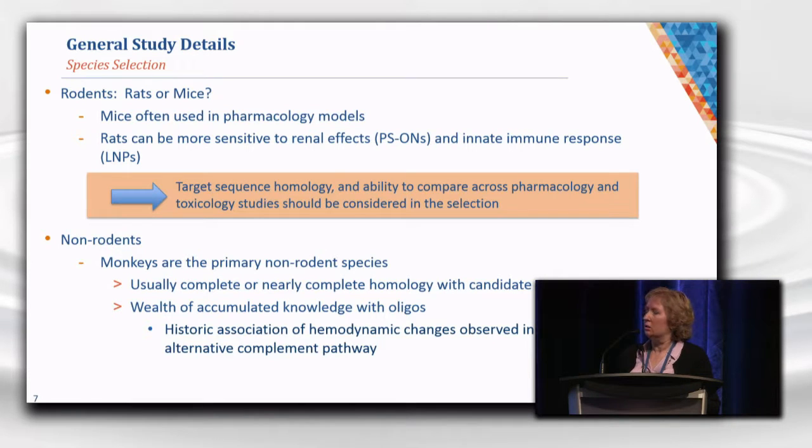For non-rodents, the monkey is the animal of choice. Typically, if there is an issue with homology, it's going to be with a rodent and not the monkey, so monkeys are often a good option for looking at exaggerated pharmacology. There is a wealth of accumulated data in monkeys because they've been used for roughly the last 20 years in oligonucleotide development programs — in part due to historic data with antisense showing hemodynamic changes due to complement activation. Typical programs include one rodent species and then a monkey.